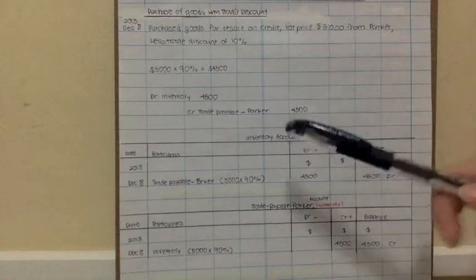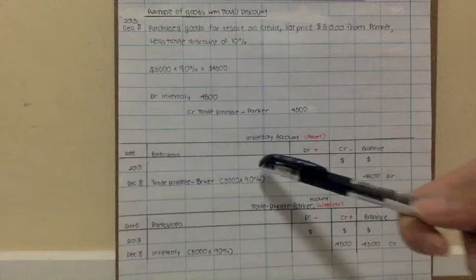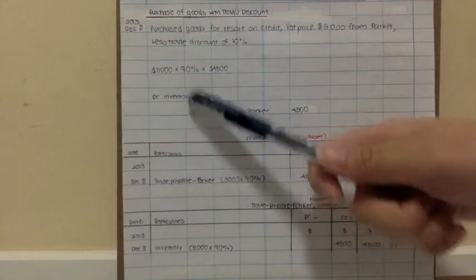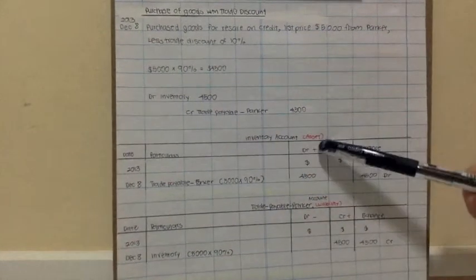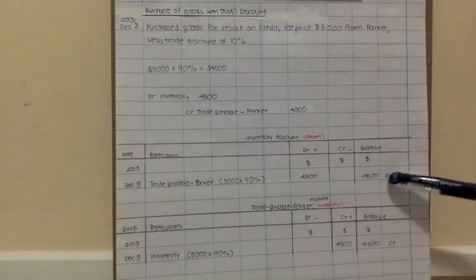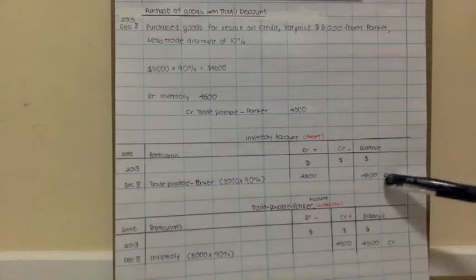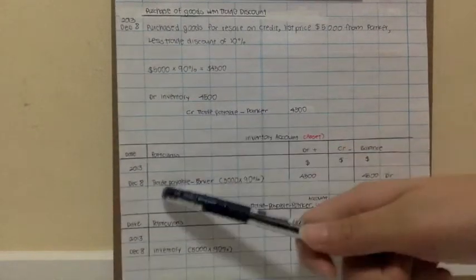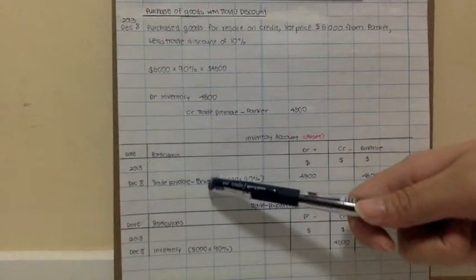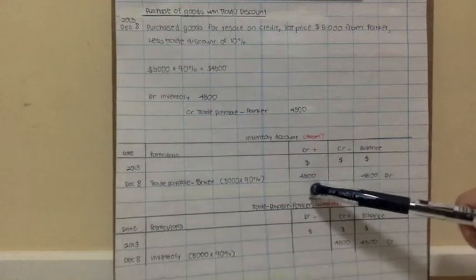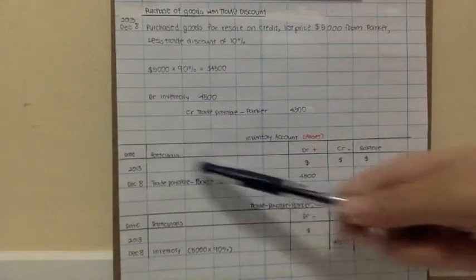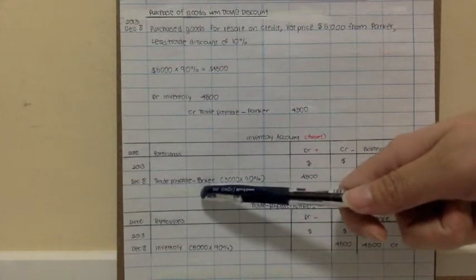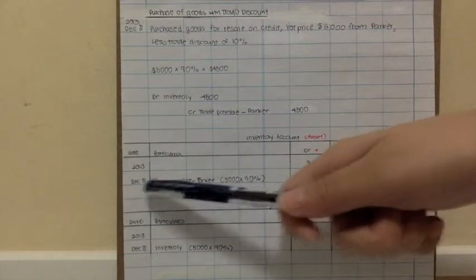If you want to translate this into our accounts, how does it look like? First you have to open an inventory account. Take note that the amount is debit increase $4,500, which should give you a balance of $4,500 debit. The details would then be the opposite of this double entry: trade payable Parker. This means the inventory increases because they have bought inventories and owe Parker trade payable on the 8th of December.